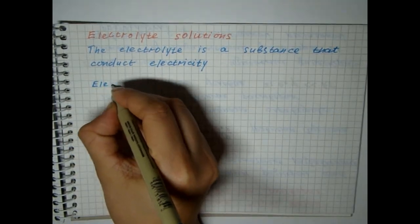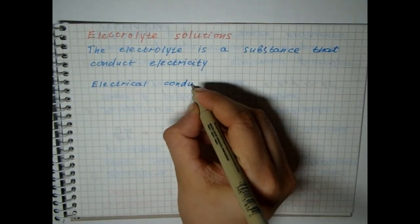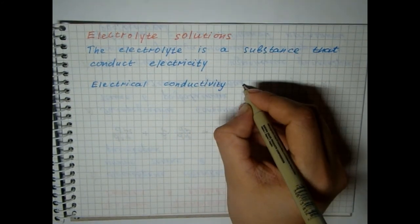Electrolytes have electrical conductivity. Electrical conductivity is the ability of a substance to conduct electric current.